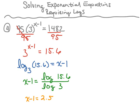However, I'm not done yet because this equation says x minus 1, and I want x by itself. So we're going to add 1 to both sides. Adding 1 to 2.5, I now end up with 3.5. Therefore, the solution to this equation is x equals 3.5.